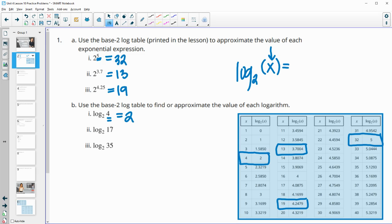So now we're going to look for 17 in the x column. And we find that here. So 2 to the 4.0875 will give us 17. And then 2 to what power will give us 35? So look for 35 in your x column. And then it'll kick back that exponent of 5.1293. So 2 to the 5.13 will give us 35.